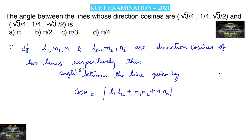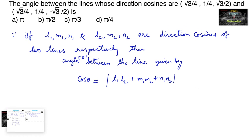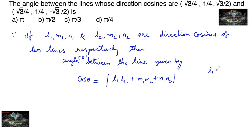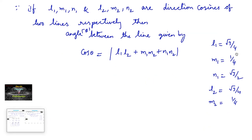In the given problem, direction cosines are: l1 = root 3 upon 4, m1 = 1 upon 4, n1 = root 3 upon 2, and l2 = root 3 upon 4, m2 = 1 upon 4, and n2 = minus root 3 upon 2.